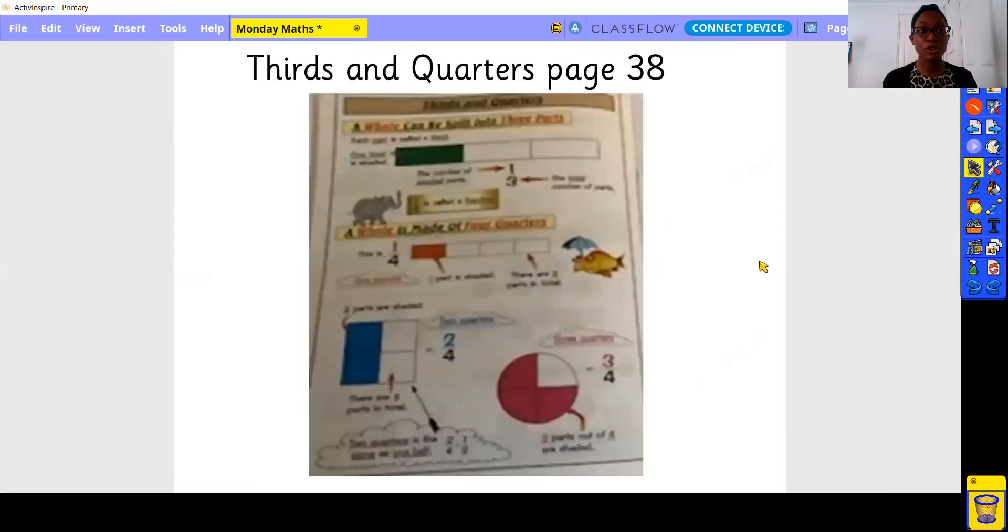Now on to thirds and quarters using your CGP book. When you turn to page 38, a whole can be split into three parts. Each part is called a third. One third is shaded. You can see that in your example. The green shows the one bit that shaded. The number of shaded parts are one. The total number of parts are three. One third is called a fraction.